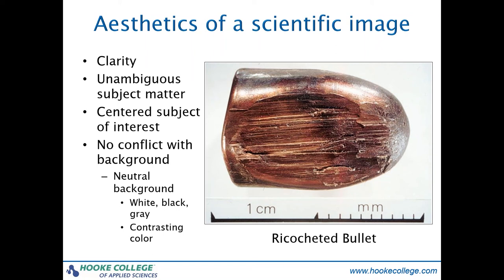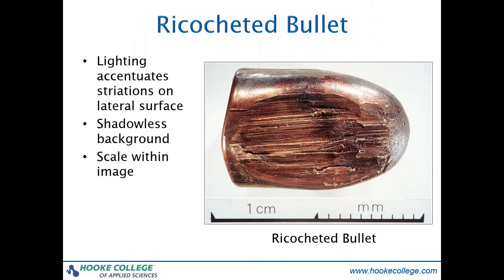The bullet image includes a scale for size included in the original image. The subject was placed on translucent plastic, which was transilluminated sufficiently to eliminate any distracting shadows. The subject was illuminated to show the morphology of the bullet and the specific striations resulting from the ricochet. The subject occupies most of the entire frame, and all of the lines are straight. This was photographed on 4x5-inch film with a high-quality macro lens. Thus, it is of high informational value in an attractive image. Scientific images should be of high informational value.